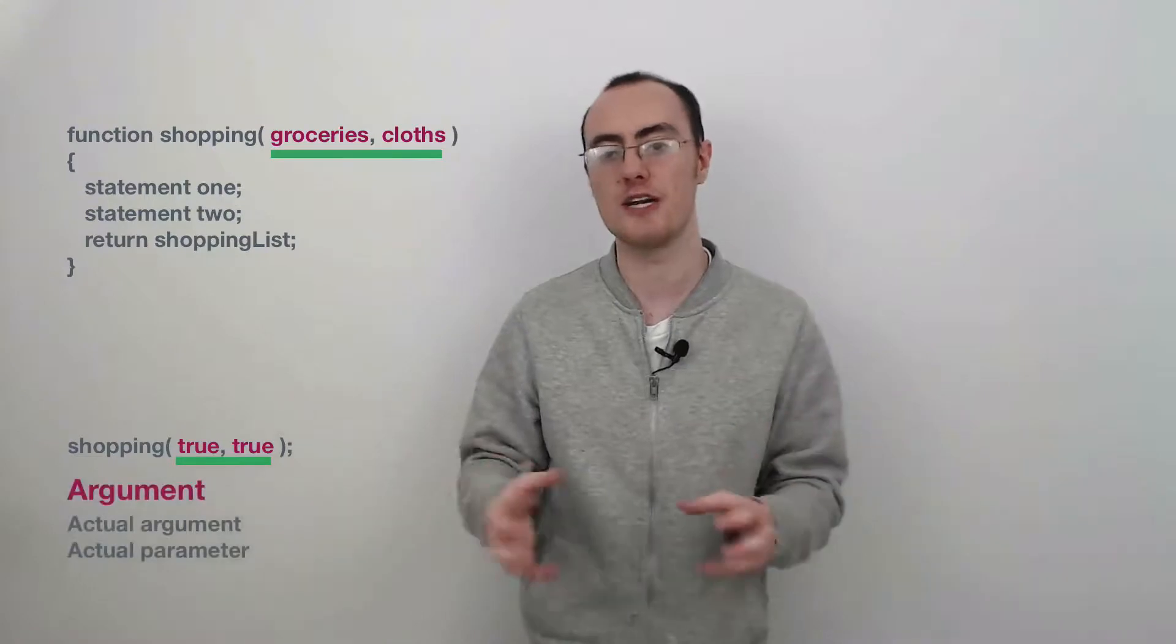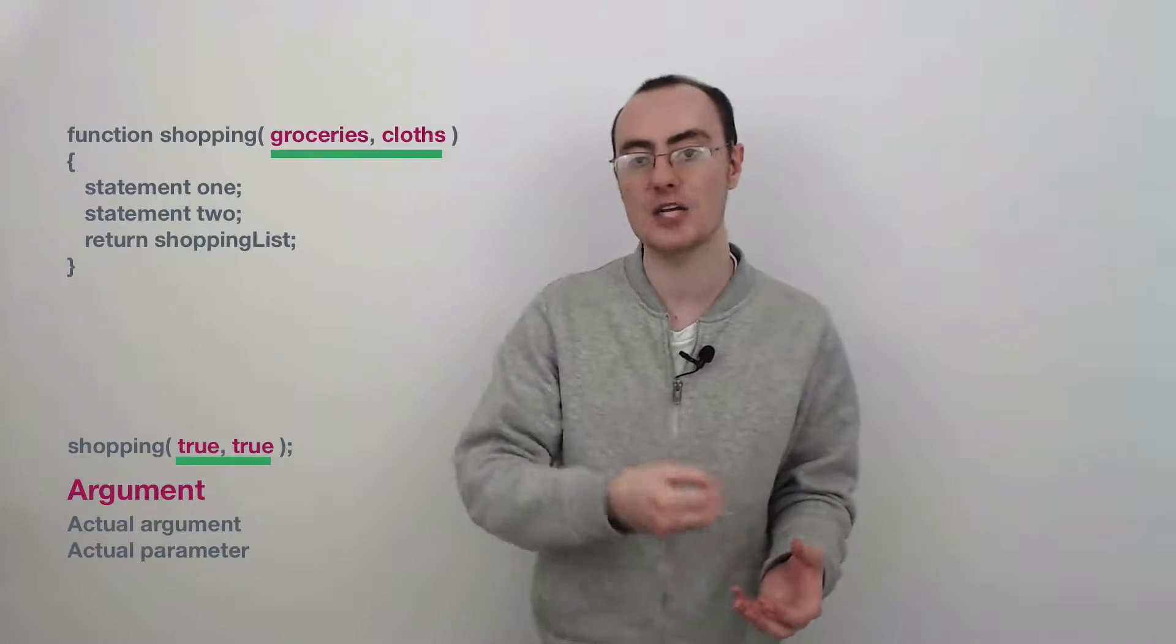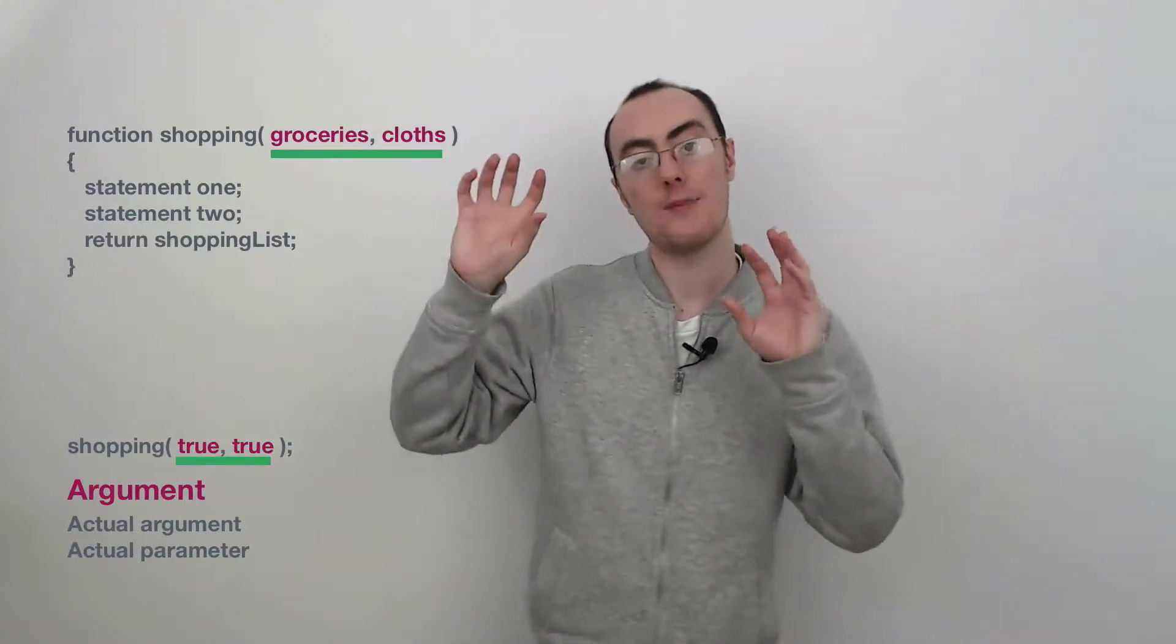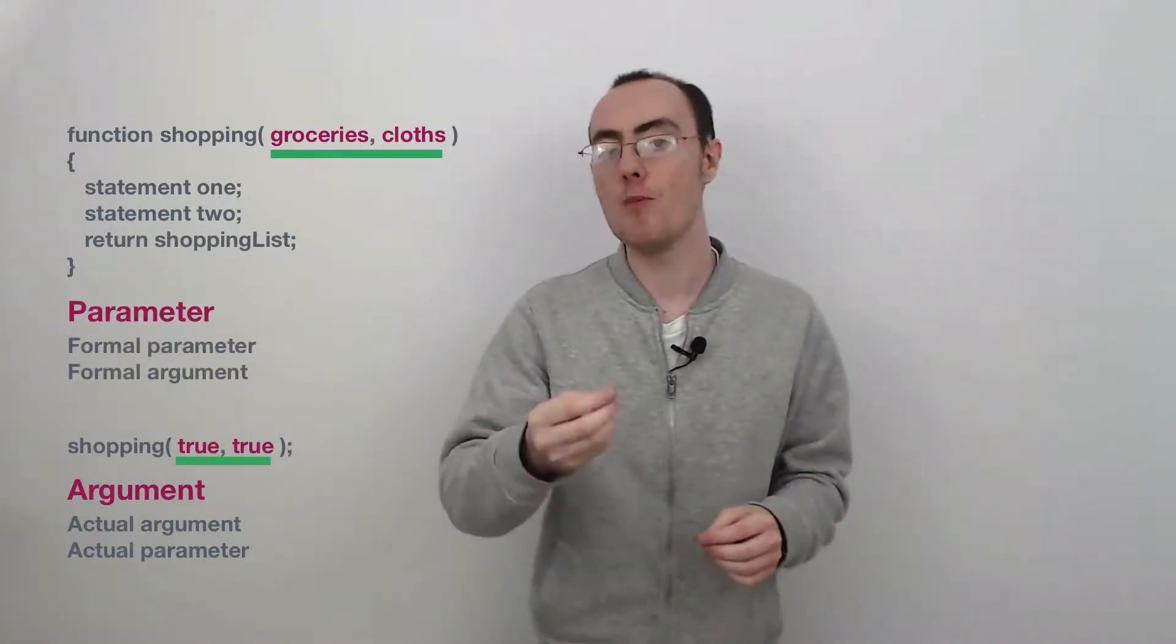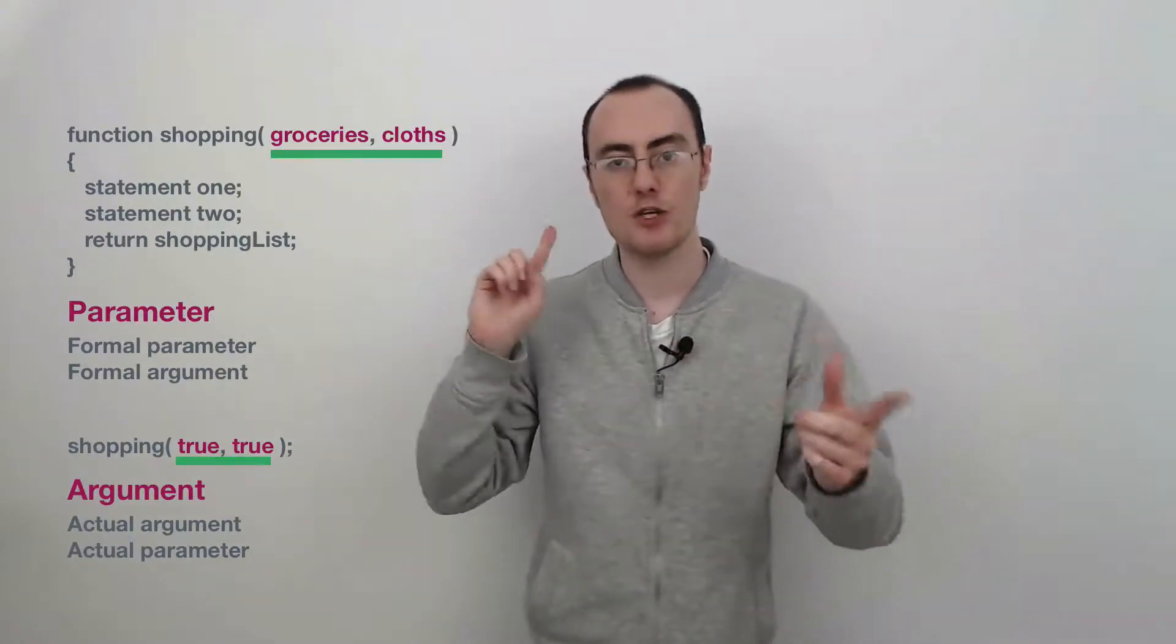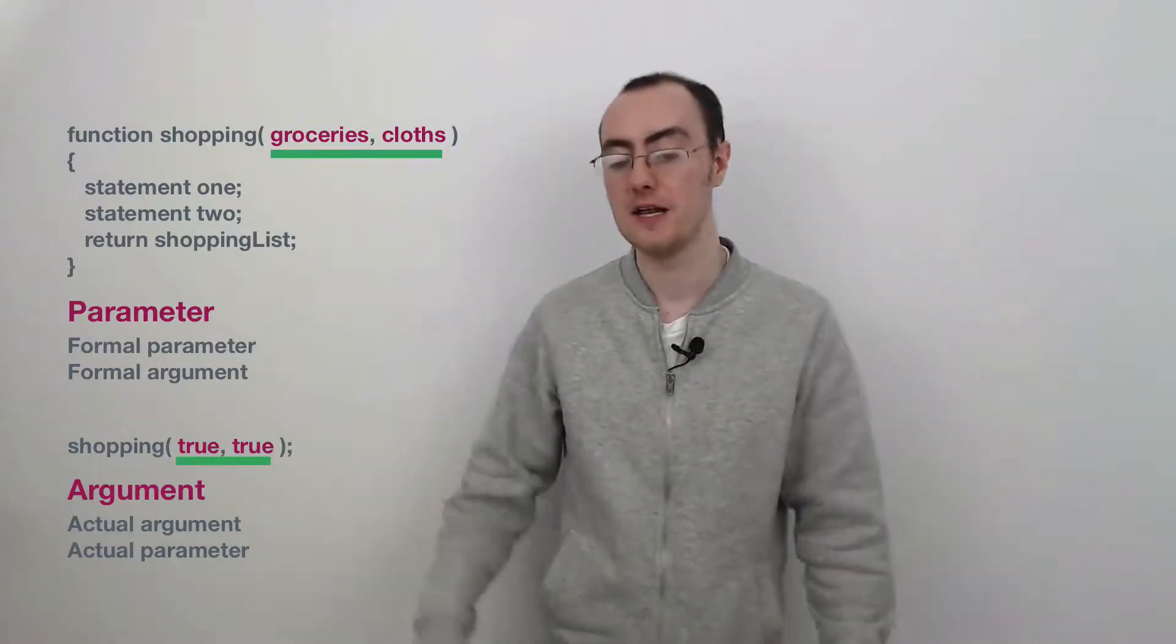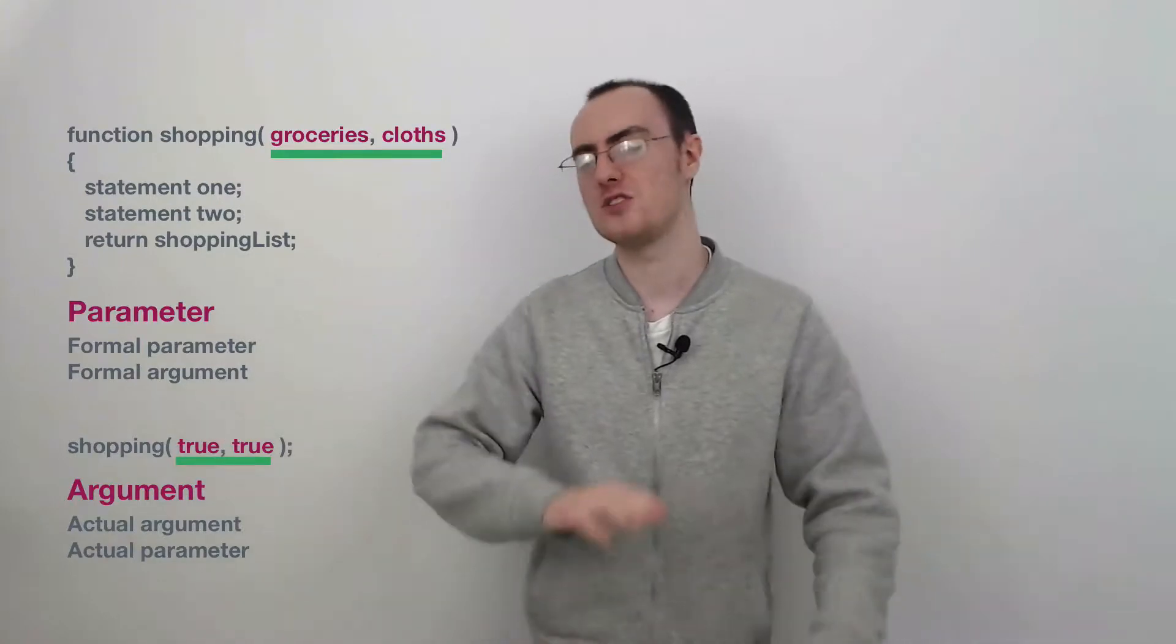Now the reason why these names were interchangeable is because you can actually call an argument an actual argument or actual parameter. And you can call a parameter a formal parameter or formal argument. So you can see how the word argument and parameter are swapped around. But please don't complicate it. So what they decided to do is just get rid of all that. Don't make it interchangeable. Arguments are the values you're passing in to adapt the way the verb works to change the execution if you will.